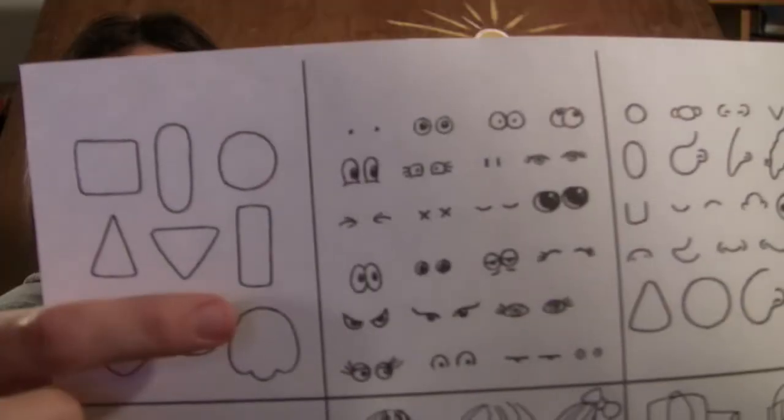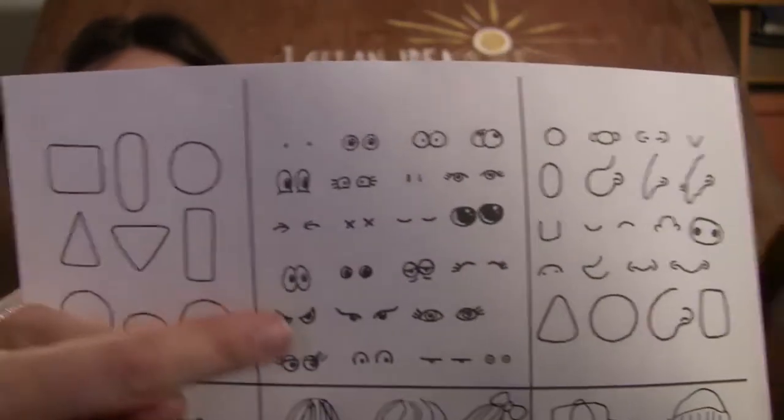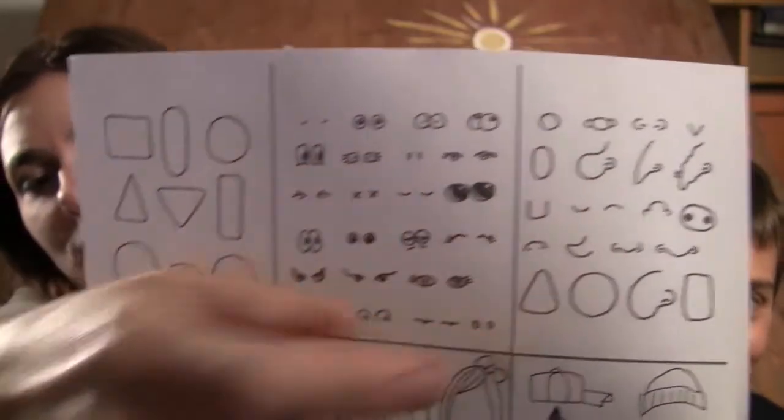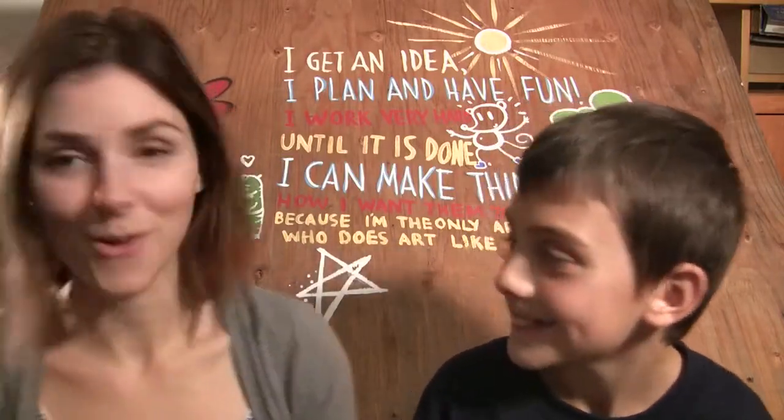Basically what the game is you get your friend to choose a shape of the face and then you draw it. Then they choose eyes and you draw those eyes on the face and then you choose a nose and you put that on the face. So we're gonna play this game right now. Do you want to play? Yeah. Alright.